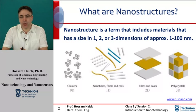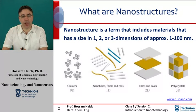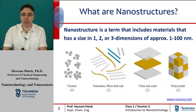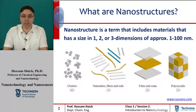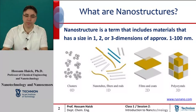Nanocomposite surfaces, or thin films, have a thickness between 1 and 100 nanometers, while the other two dimensions are much greater. These structures are categorized as two-dimensional complex materials.